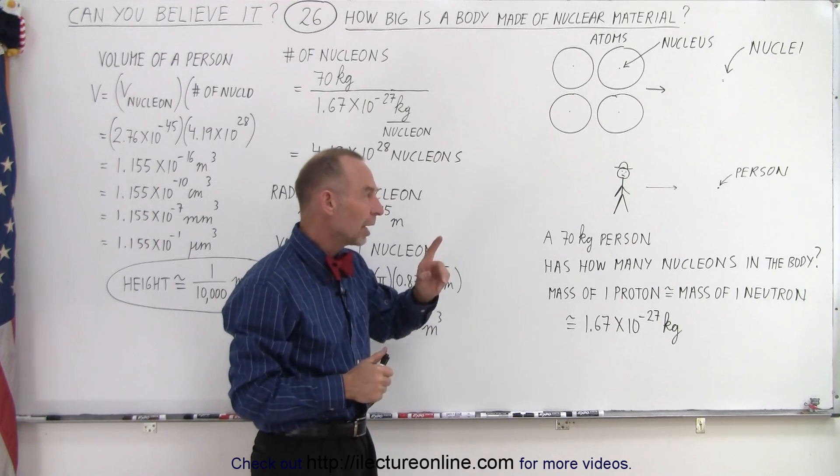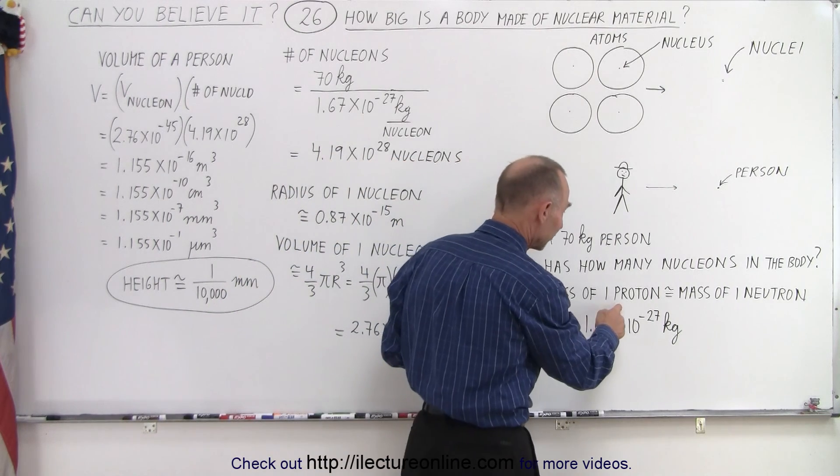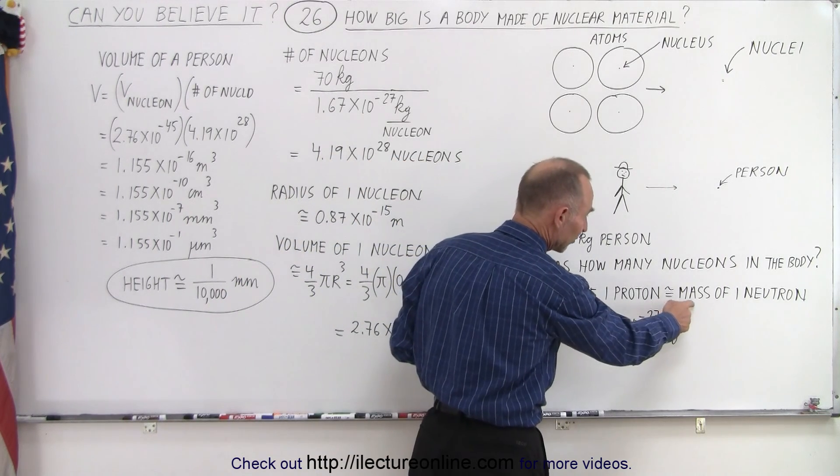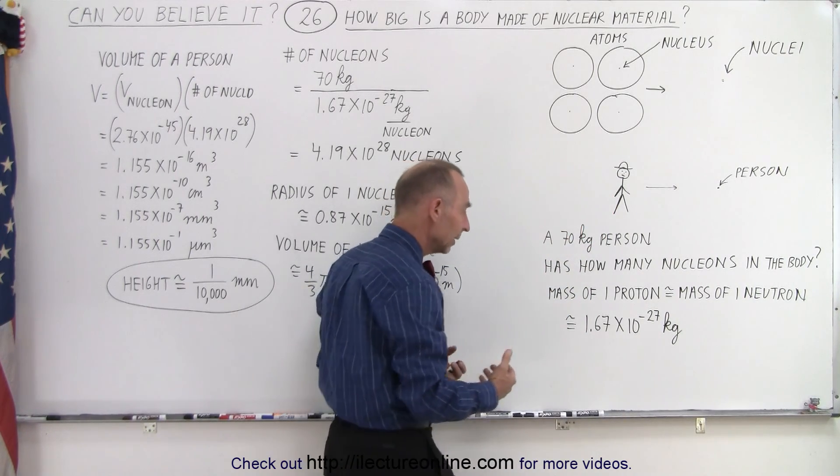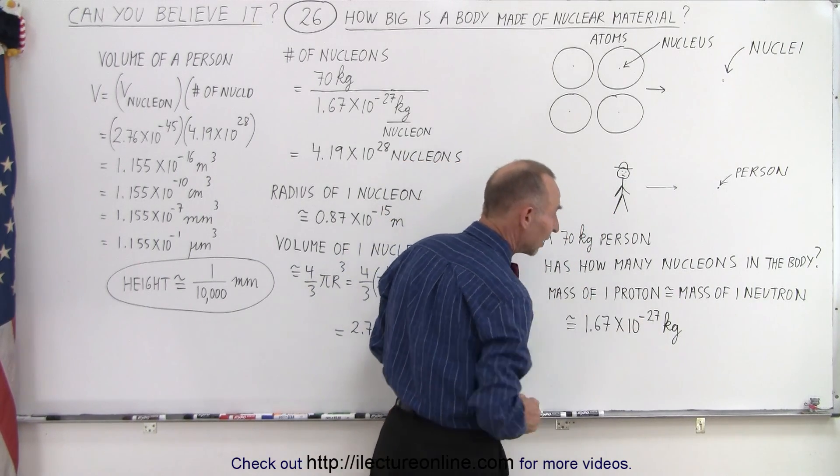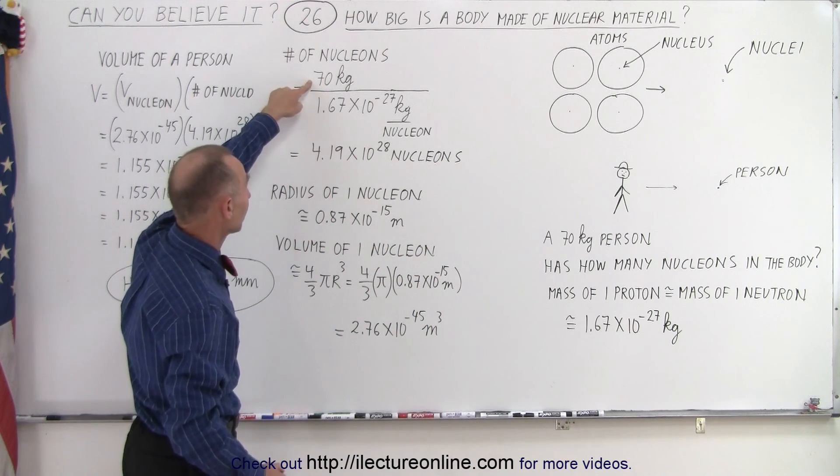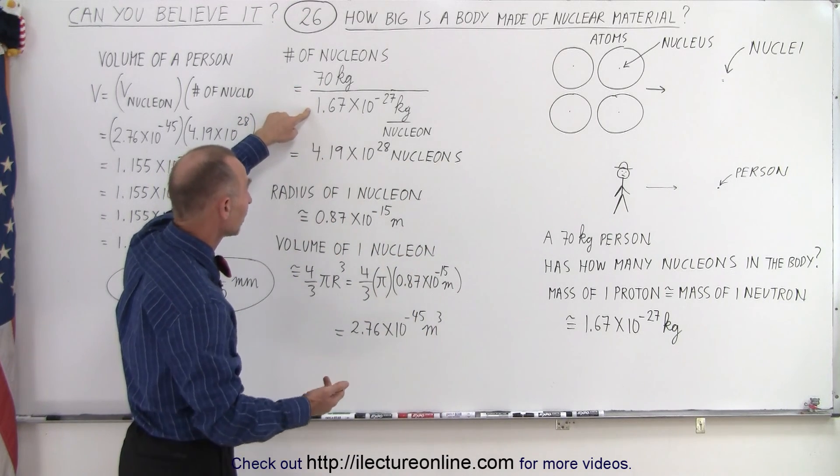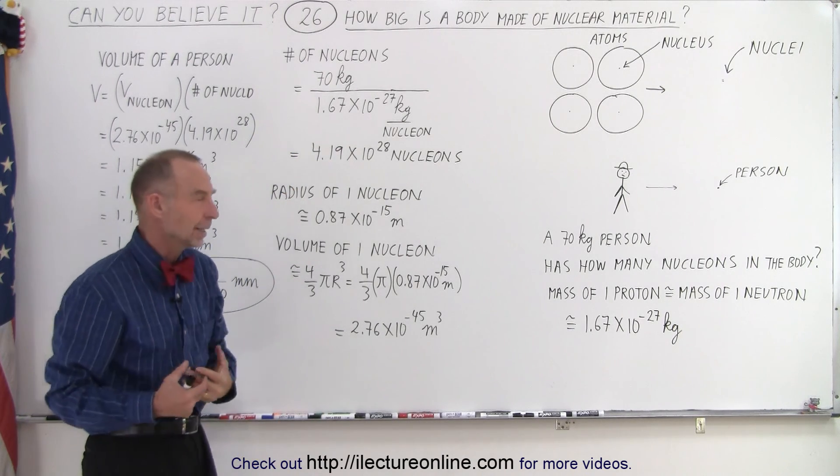Now, how many nucleons does the body have? Well, it turns out that the mass of a single proton, which is about the same as the mass of a single neutron, that's why they're called nucleons, is 1.67 times 10 to the minus 27 kilograms. So, if we divide the mass of a person by the mass of a nucleon, we end up with about 4.2 times 10 to the 28 nucleons in the body.